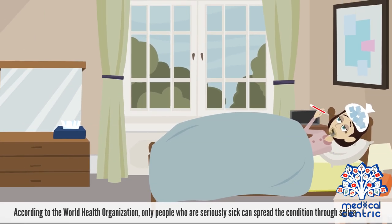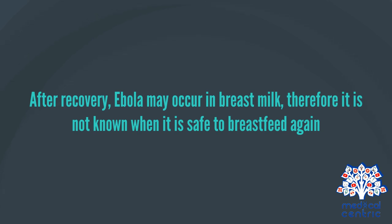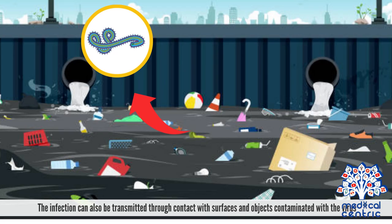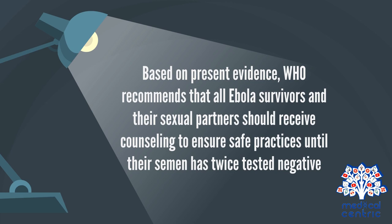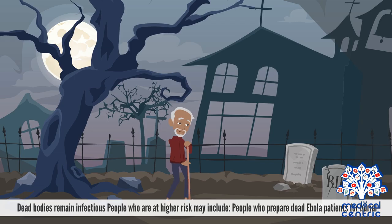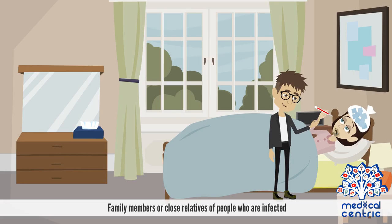According to the World Health Organization, only people who are seriously sick can spread the condition through saliva. After recovery, Ebola may occur in breast milk, so it is not known when it is safe to breastfeed again. The infection can also be transmitted through contact with contaminated surfaces and objects. The Ebola virus may persist in semen for many months even after recovery, leading to infections via sexual intercourse. The WHO recommends that all Ebola survivors and their sexual partners receive counseling and safe practices until their semen has twice tested negative. Dead bodies remain infectious. People at higher risk include those who prepare dead Ebola patients for burial, health workers treating infected people, and family members or close relatives of infected individuals.